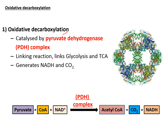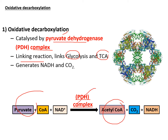Oxidative decarboxylation is catalyzed by the pyruvate dehydrogenase (PDH) complex, a multi-enzyme complex. It is also known as a linking reaction because it links glycolysis to the TCA cycle — pyruvate is the end product of glycolysis, while acetyl coenzyme A is the first substrate for the TCA cycle. Without the PDH complex, glycolysis cannot feed into the TCA cycle for energy production. Importantly, NADH is also produced from this reaction for additional ATP production.